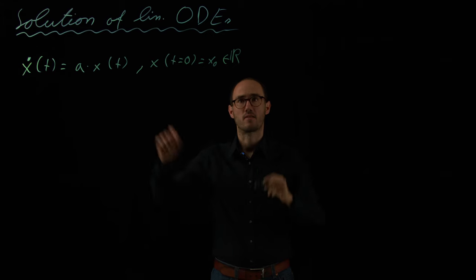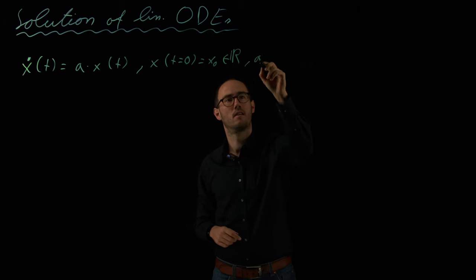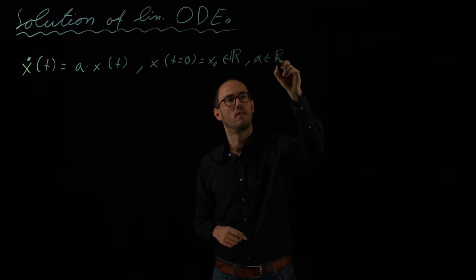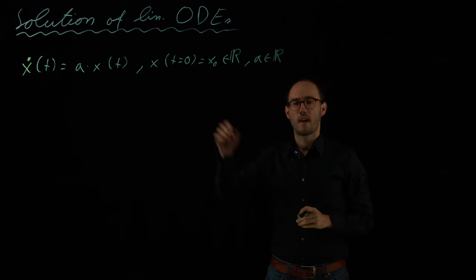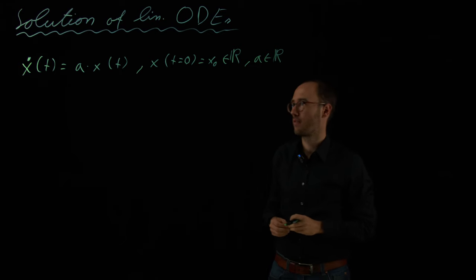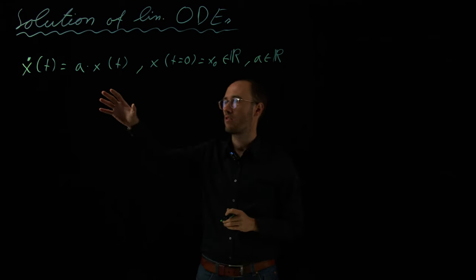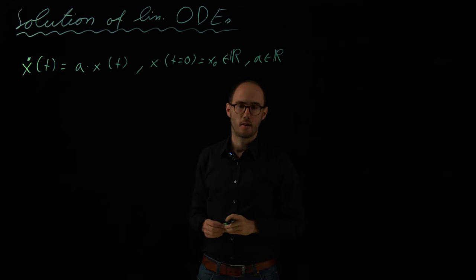And this A here is also some parameter, also coming from the real numbers, which we will analyze later on. So, what we have here is the most simple form of an ODE. We have a scalar ODE, which is linear, and we want to solve it.